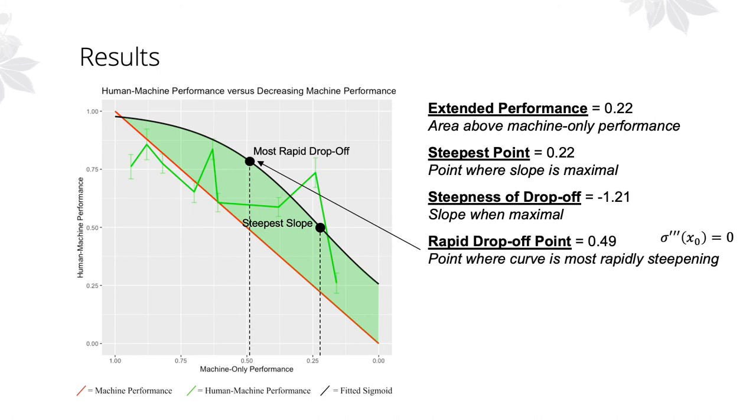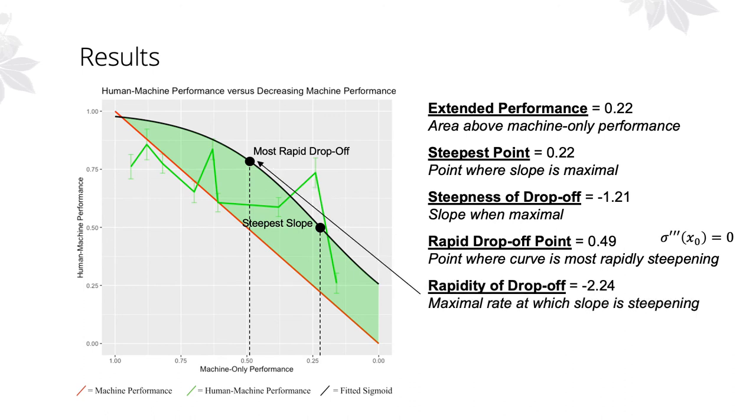Finally, we also wanted to analyze how rapidly performance was degrading, and we operationalized this by finding the point at which the curve is most rapidly steepening, which occurs when the machine prediction is 49% accurate. The value of the second derivative at this point suggests that for every 1% decrease in the machine prediction accuracy, we should expect the slope of performance curve to be steepening by 2.2% for every 1% decrease.